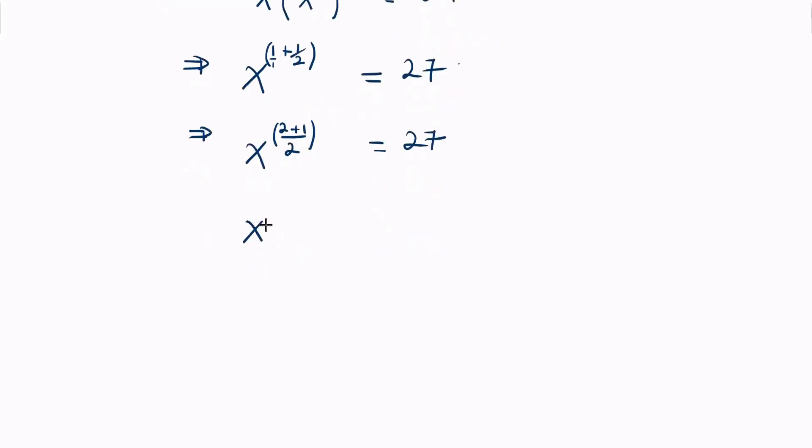As we simplify the left-hand side, we have x raised to the power of 3 over 2 being equal to 27.